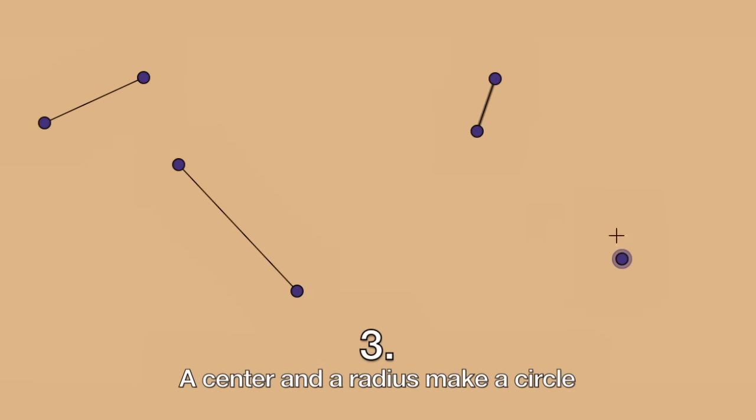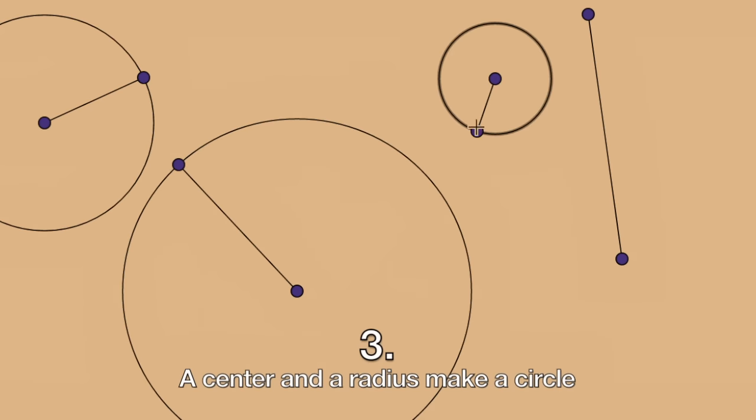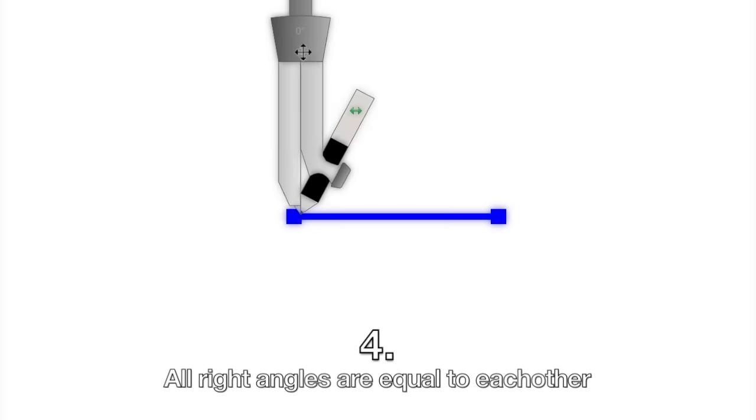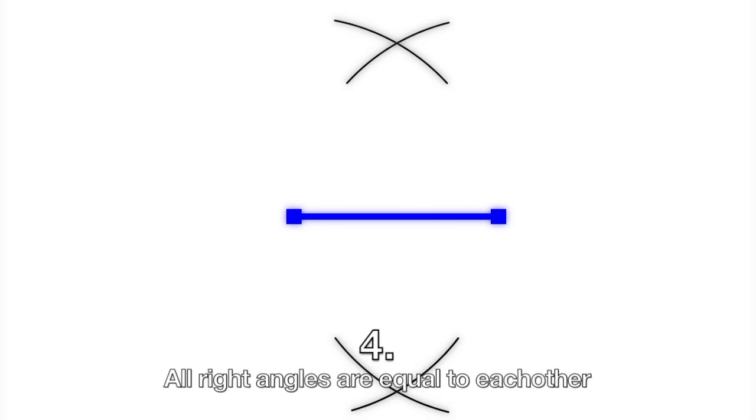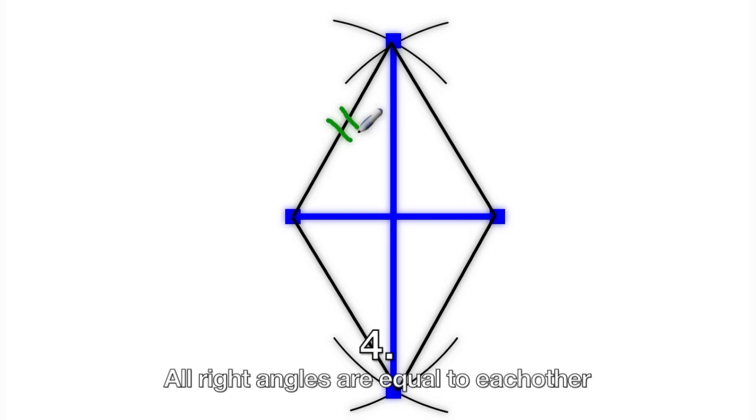Three, a center and a radius make a circle. Four, all right angles are equal to each other.